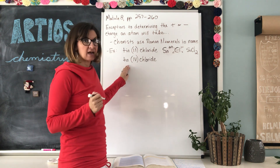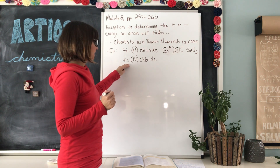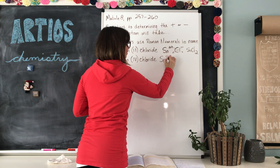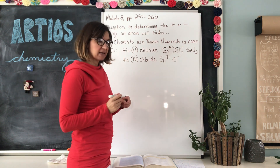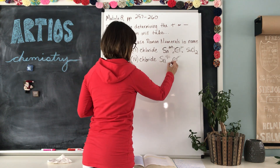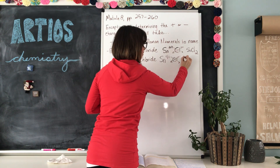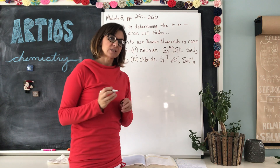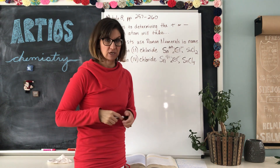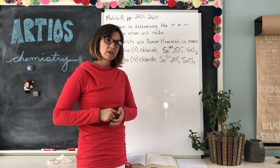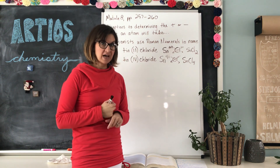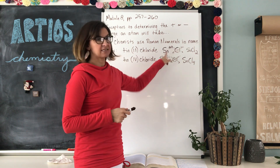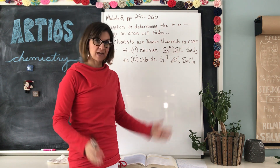Tin can also take on a 4+ charge, so it would be tin 4+ chloride. Sn⁴⁺ with Cl⁻ — once we swap those numbers — gives the formula SnCl₄. Any time you come across an exception, you will be given a Roman numeral, and that becomes the positive charge for that ion. That's how you handle those exceptions.